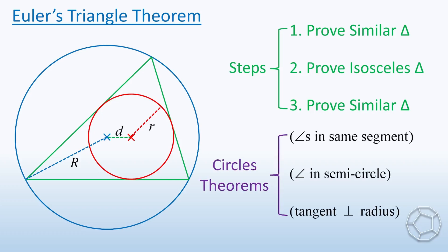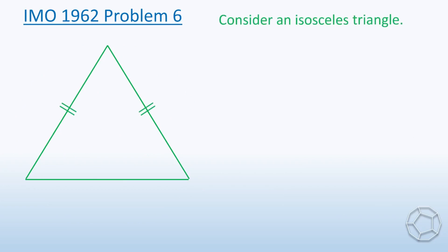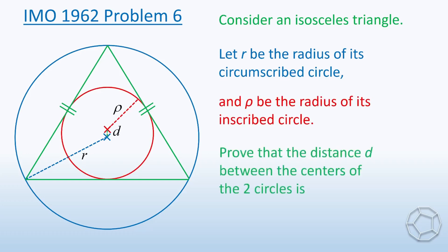So let's start with the original IMO problem. Consider an isosceles triangle. Let r be the radius of its circumscribed circle and ρ be the radius of its inscribed circle. Prove that the distance d between the centers of the two circles is given by d equals the square root of r times bracket r minus 2ρ.